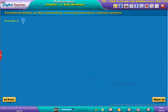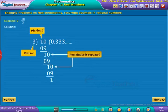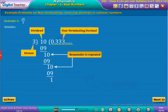Let us consider one more example. Here, when the dividend 10 is divided by divisor 3, the remainder repeats itself. The decimal number in the quotient repeats without termination. In this example, as 3 is repeating, it is a non-terminating decimal.